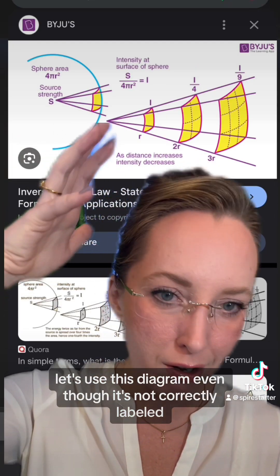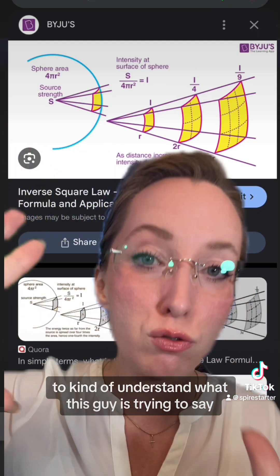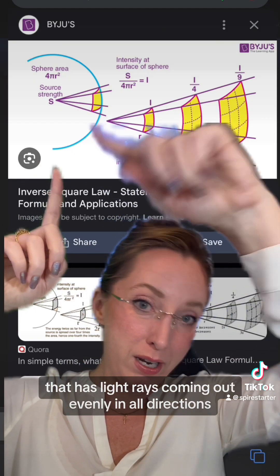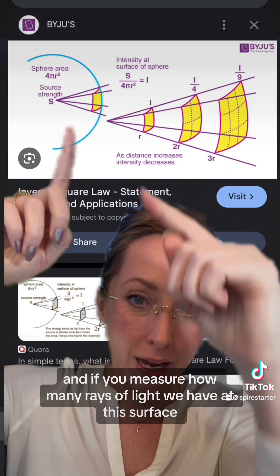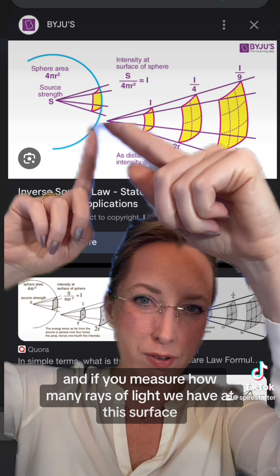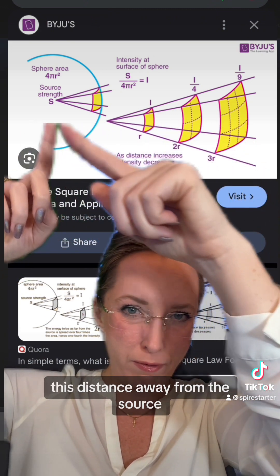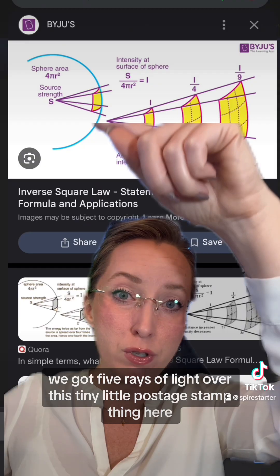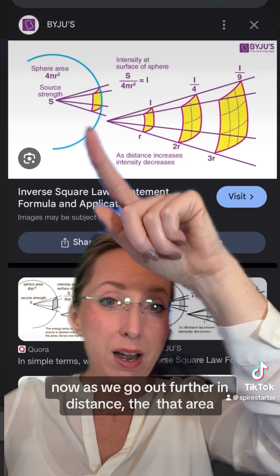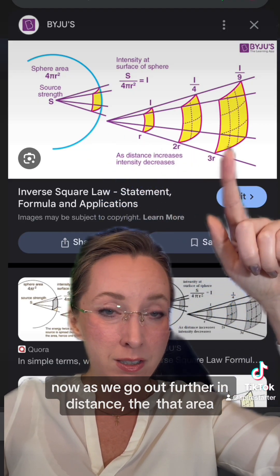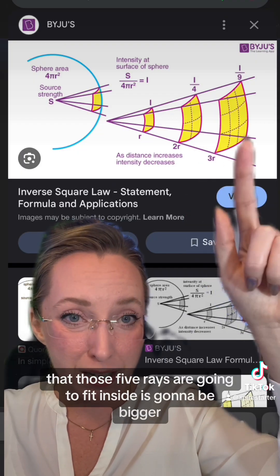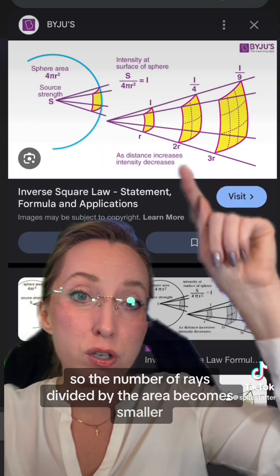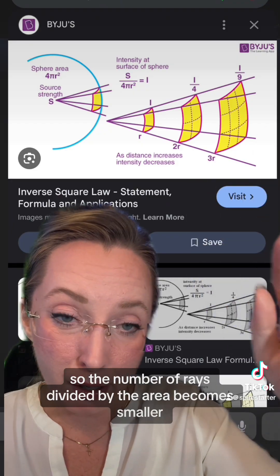Let's use this diagram even though it's not correctly labeled to kind of understand what this guy is trying to say. So we got a point source here, that means a light source that has light rays coming out evenly in all directions. And if you measure how many rays of light we have at this surface, this distance away from the source, we'll say we got five rays of light over this tiny little postage stamp thing here. Now as we go out further in distance, then that area that those five rays are going to fit inside is gonna be bigger. So the number of rays divided by the area becomes smaller.